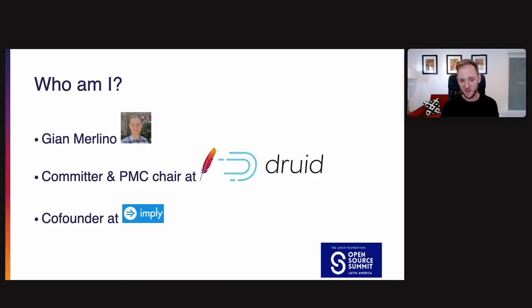So, okay, who am I? I'm Gian Rolino. I am a committer and I'm the PMC Chair at Apache Druid. And I'm also a co-founder at Imply, a company that is built around Apache Druid.